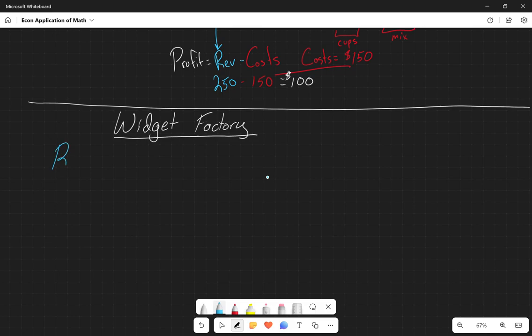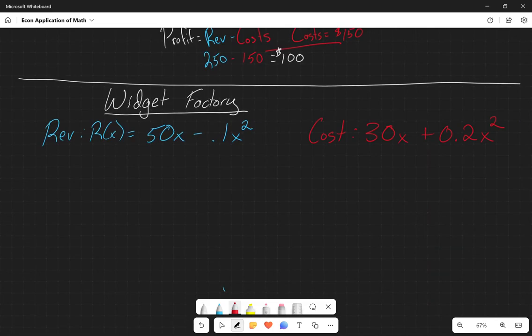This time we're going to talk about economists' favorite things, widgets. So we have this widget factory, and we're told that the revenue function, the r of x, is equal to 50x minus 0.1x squared. And we're told that the cost function is going to be linear in x with no fixed costs, and it's going to have some costs that are increasing as x increases, increasing at an increasing rate as x increases. So this is the one where the more that they produce, the higher chances that the widgets disappear or are broken, whatever the case may be.